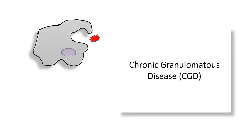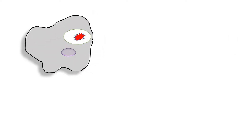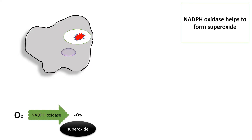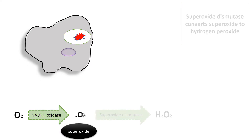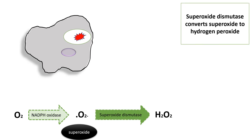In the first step of phagocytosis, phagocytic cells ingest the pathogens to form a phagosome. This process initiates phagocytosis-mediated killing. Inside the cell, NADPH oxidase helps to form superoxide molecules from oxygen. Superoxide is then converted to hydrogen peroxide by superoxide dismutase.